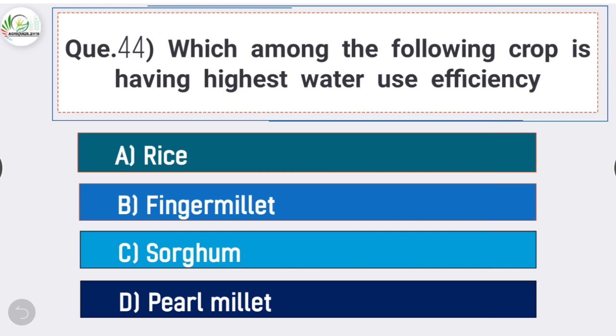Question number forty-four: which among the following crops is having highest water use efficiency? Answer is option B - finger millet.